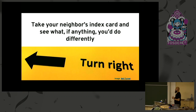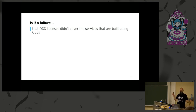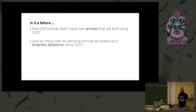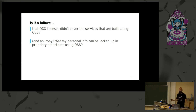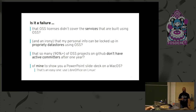Okay, so with this hindsight, in the remaining 10 minutes, I'd like you to take your neighbor's card and talk about what you would do differently after having heard this. If you didn't write anything, here are some failure scenarios to seed your conversation: Is it a failure that OSS licenses didn't cover the services they're built on? Is it a failure and an irony that your personal info can be locked behind a proprietary database using open source software — I don't own the data, but the software that captured it was open source? Is it a failure that many open source projects — by some estimates 90%+ — have no committers after a year?